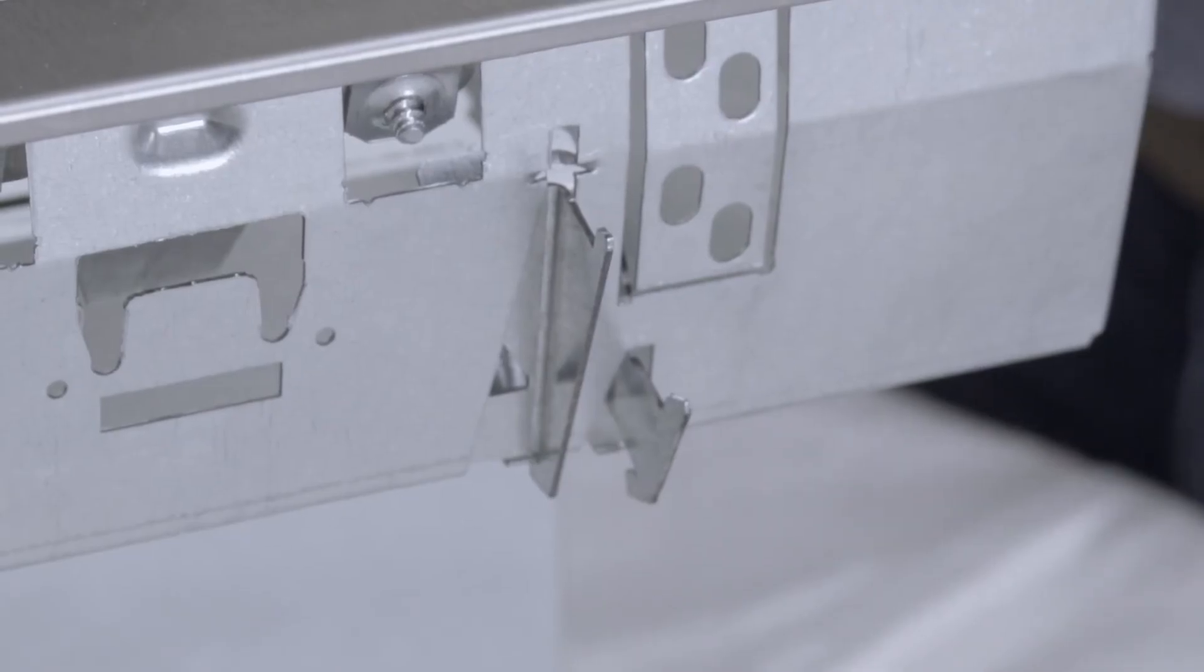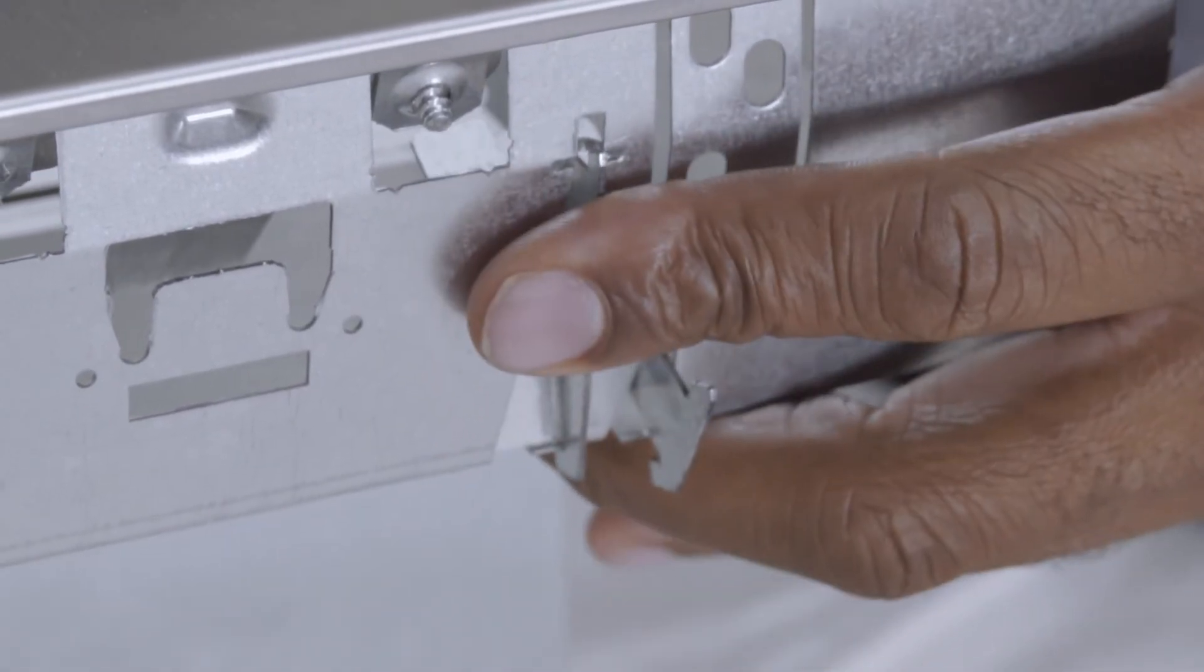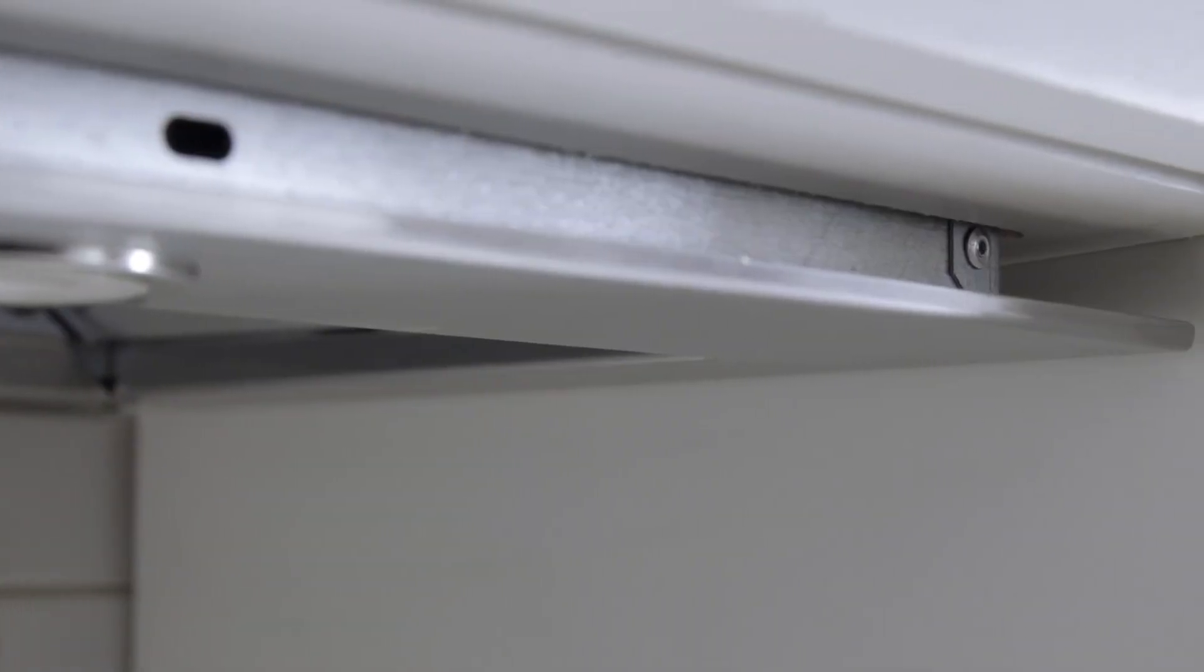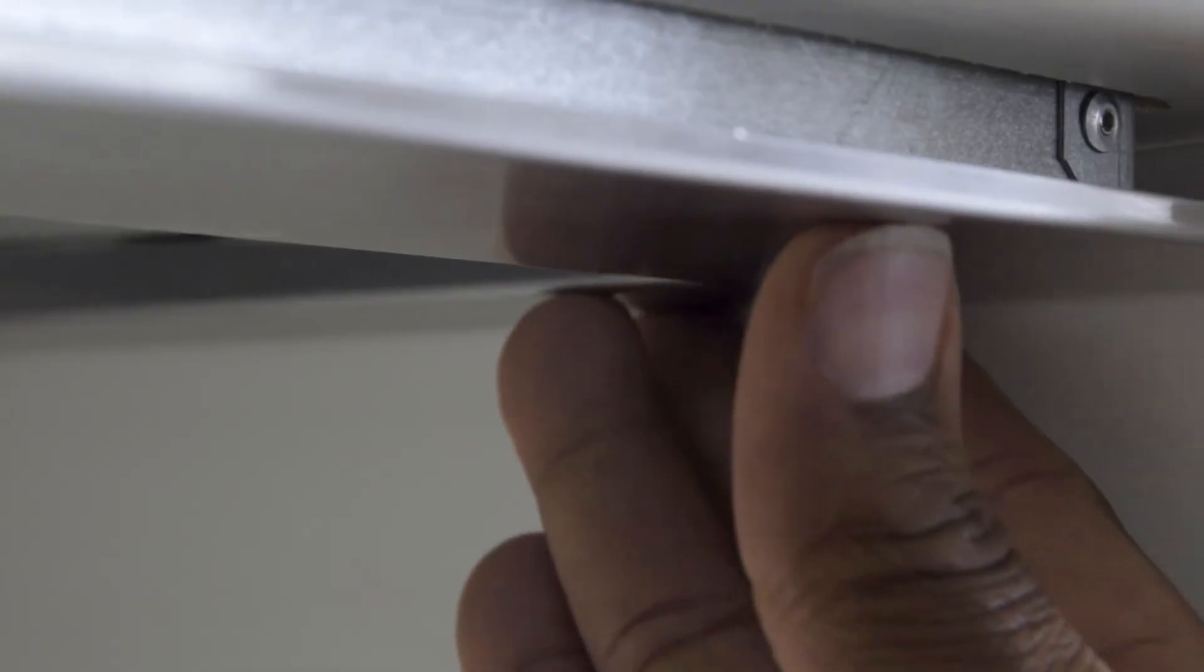The EasyOne hooks can be easily retracted to allow for easy adjustments or removal of the unit. Once the unit is held by the EasyOne clips and cabinet bracket, push the unit up so the front panel is snug against the cabinet.